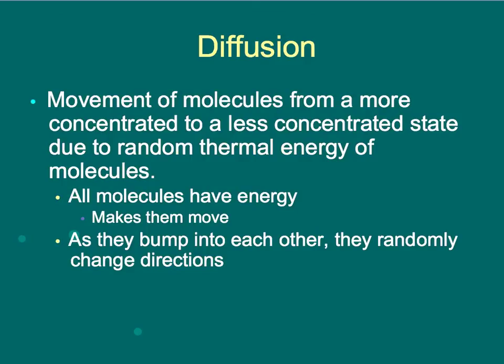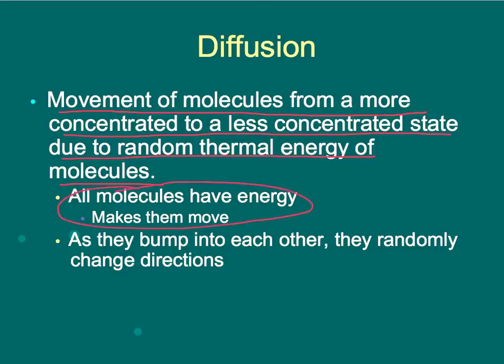Remember in class that we discussed that diffusion is the movement of molecules with the concentration gradient. This is the definition you get if you look in the textbook, which essentially says the same thing. The important thing to understand is that all molecules have energy which makes them move — that's kinetic energy — and as they bump into each other they randomly change direction relative to the concentration gradient.